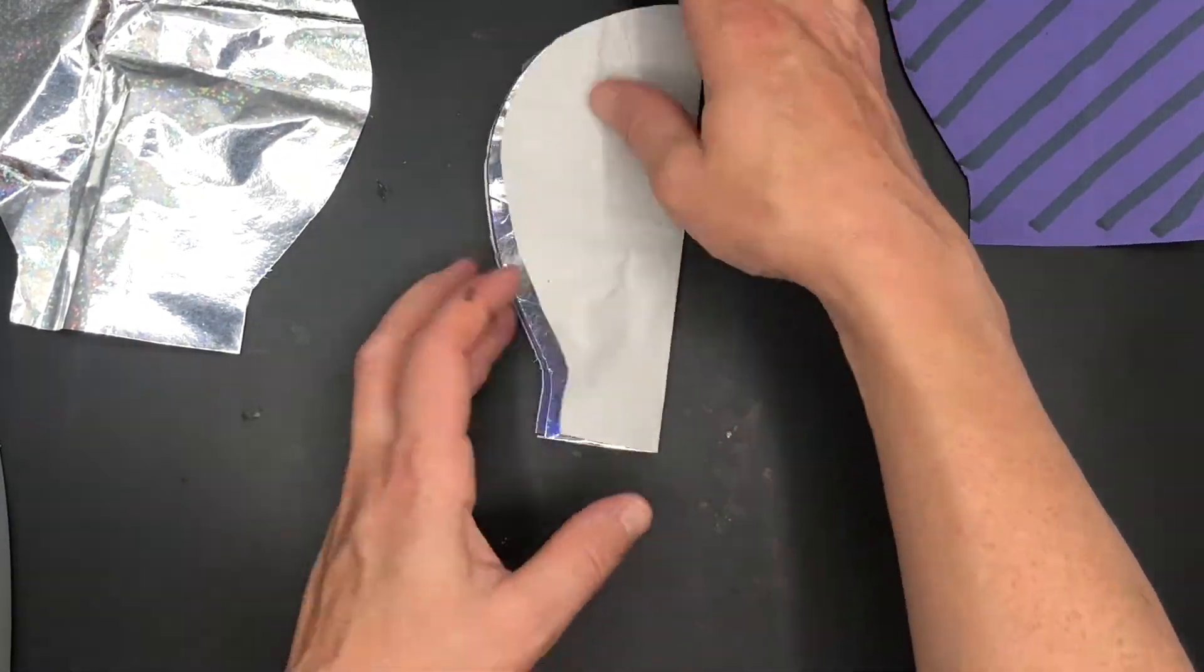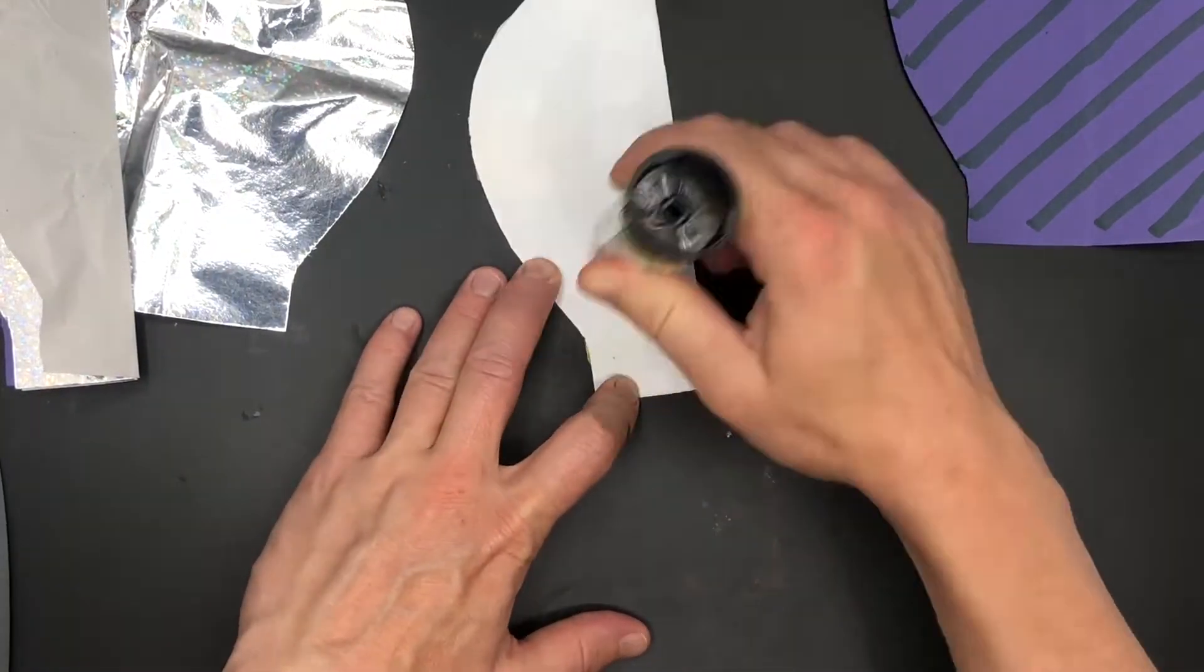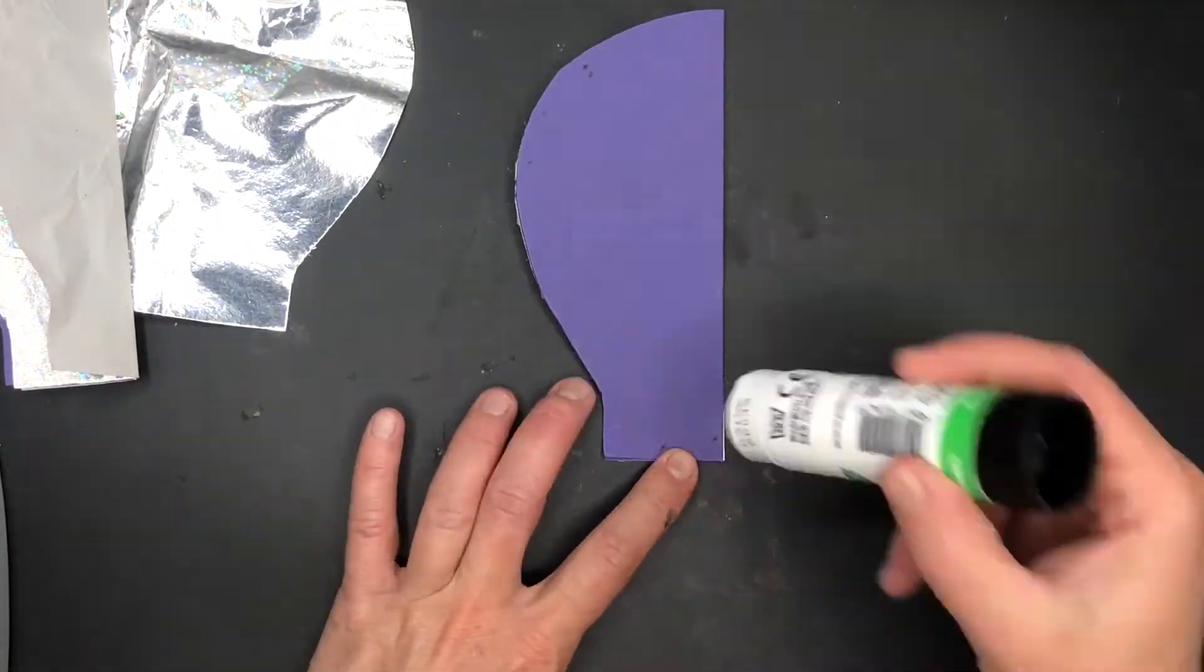Then you're going to repeat this with the remaining three so you should have three in one section and then three in another section. Sticking them on top and covering them with glue to stick them together.